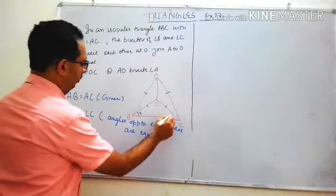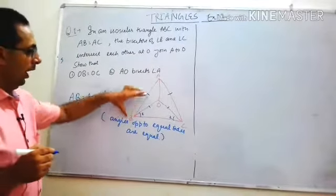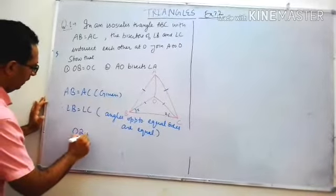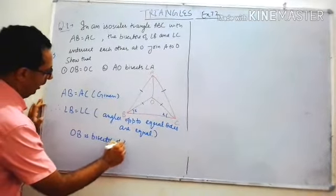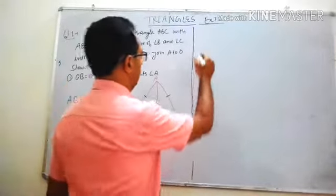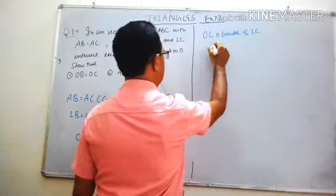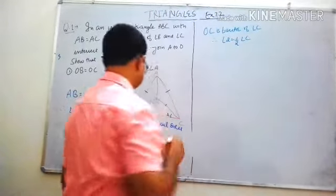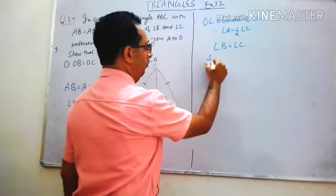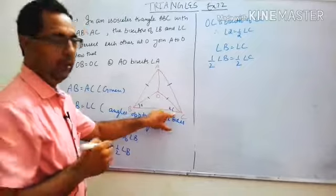We have to show angle 1 and angle 2: OB is the bisector of angle B and OC is the bisector of angle C. Therefore angle 2 is half of angle C. Because angle B equals angle C, half of angle B equals half of angle C.